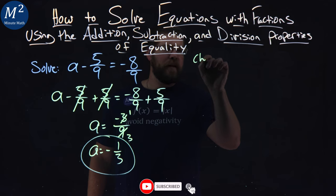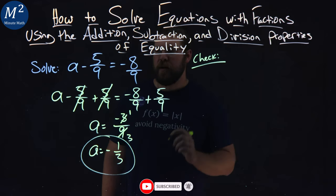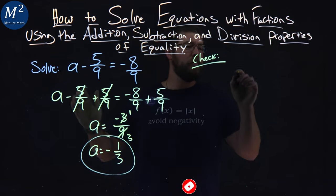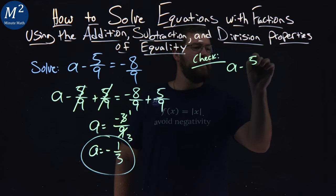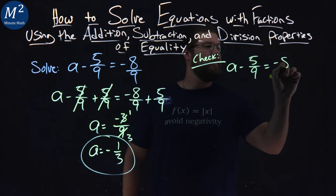Now, we've got to check that. To check it, we're going to take our original equation: a minus 5/9 equals negative 8/9.